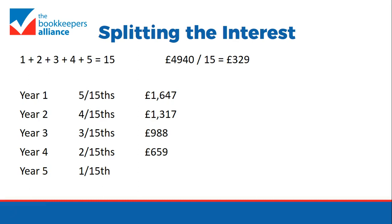£659 in the fourth year and £329 in the fifth year. This gives a more realistic idea of how the interest would be split. You could do this on a monthly basis, but for most small businesses a yearly basis is going to be enough.